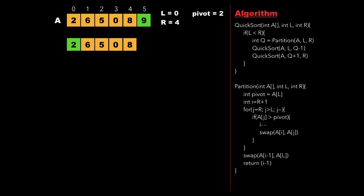The right partition array is 2, 6, 5, 0, 8 and again we call the partition function for this array. So the pivot is 2 and i points to 5 which is R plus 1. Again we run a for loop from j equal to R down to L, that is from j equal to 4 to 0, and check whether A[j] is greater than pivot. In this case 8 is greater than 2, therefore we decrement i and then swap 8 with itself. Now j points to 0 and since 0 is not greater than pivot we simply decrement j. Now j points to 5 and since 5 is greater than pivot we decrement i and swap A[i] with A[j], that is we swap 5 with 0, and further decrement j.